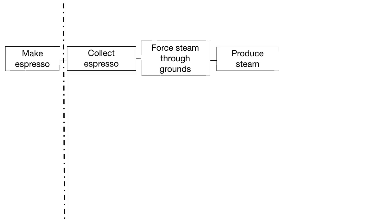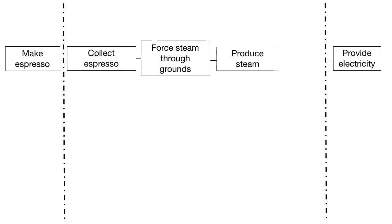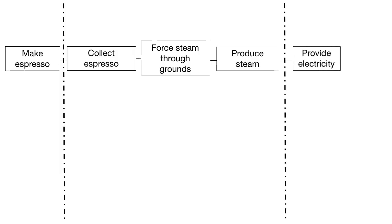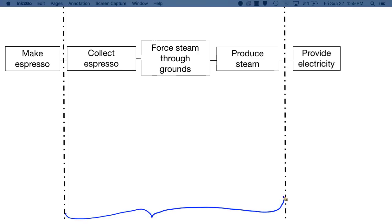We can also check: why do we produce steam? We do it so we can force it through the grounds. How do we produce steam? We do it with electricity. Providing electricity is on the outside — it's external to the machine; that's the input that goes into the machine. It looks like we have made our critical path. We've established our product domain here, along with our critical path.